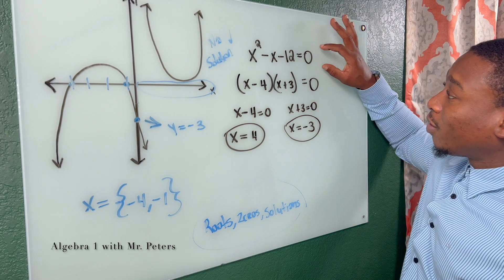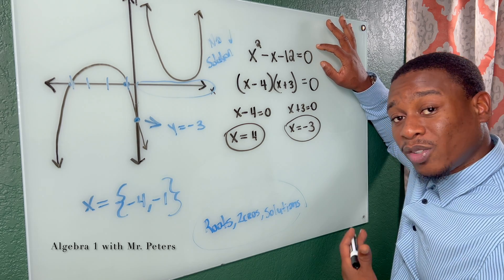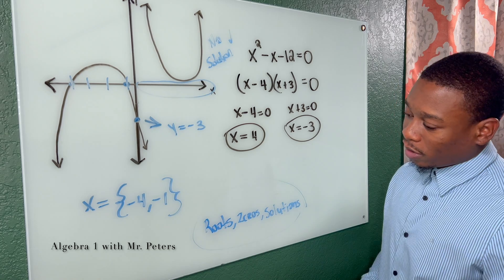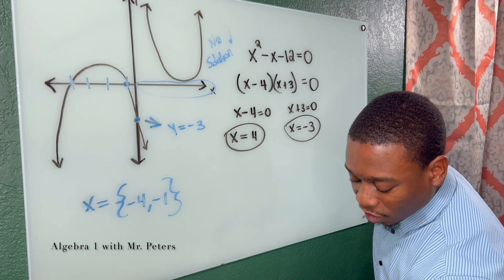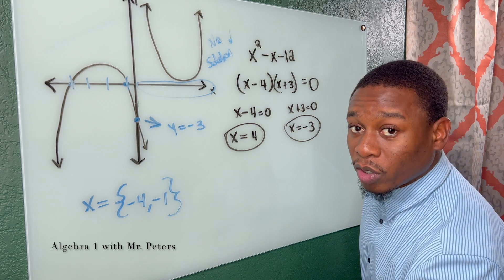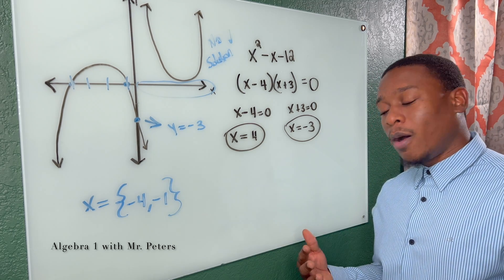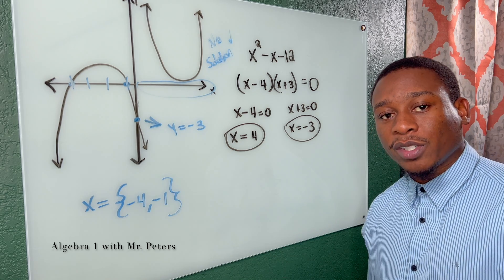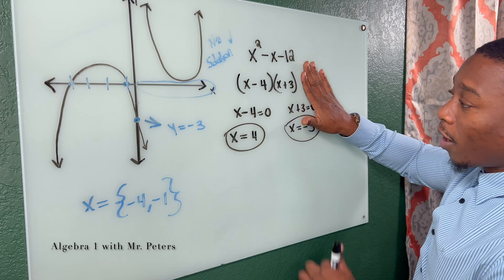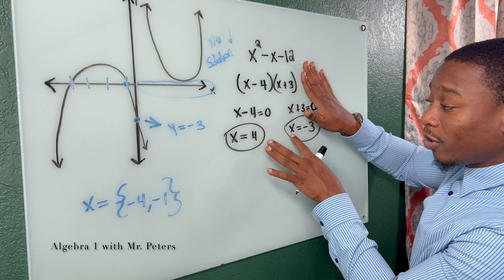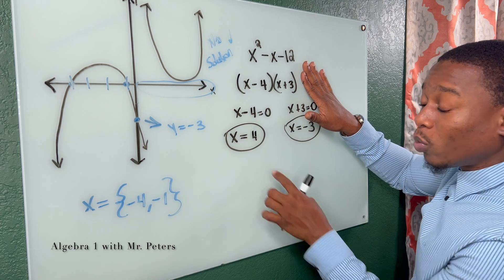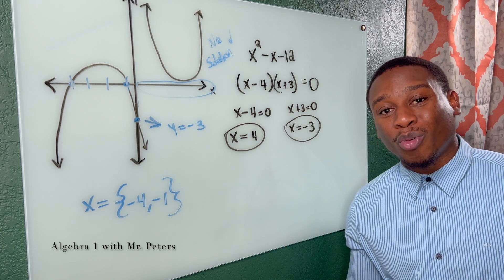Typically when students see the zero, they always remember to set their factors equal to zero. But what I notice is if we change this problem and we just kind of left it as a polynomial, students kind of don't understand what exactly is zero. But it's the same thing, guys. After you factor it, we factored it to set your factors equal to zero and then solve for the variable like we did, and that will be your root.